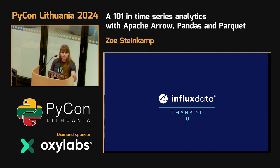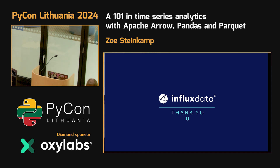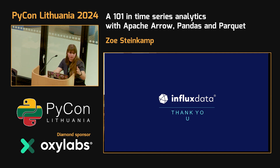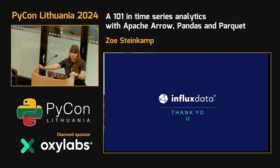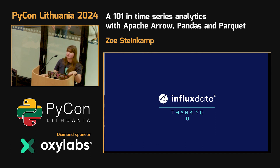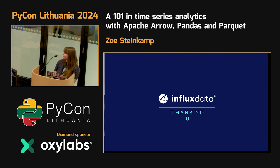Q&A: Someone asked why autocorrelation was chosen instead of the Fourier transform. The answer is that it was simply the easier and more accessible option to demonstrate. The examples actually include a few different approaches, but autocorrelation was the one chosen to display in this talk. Any additional questions can be dropped in the Discord chat after the session.